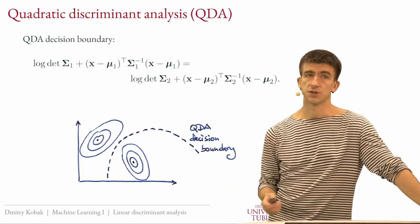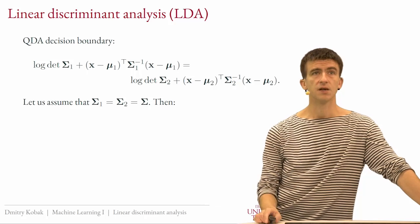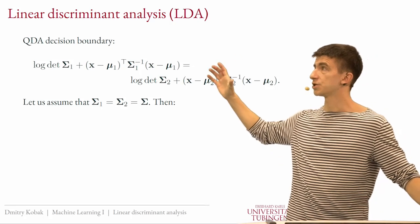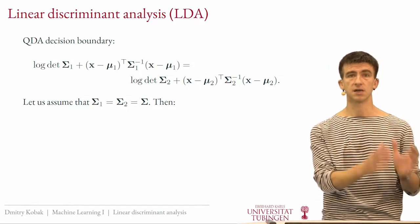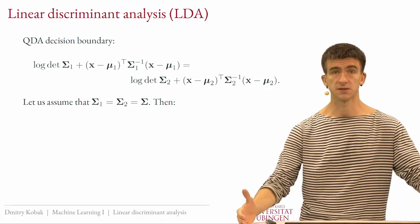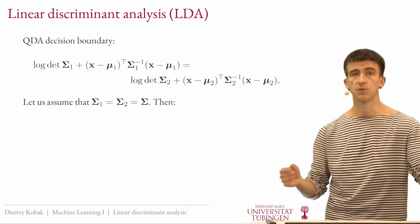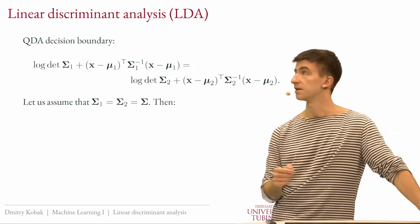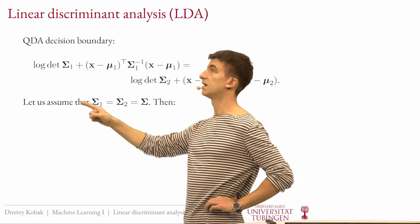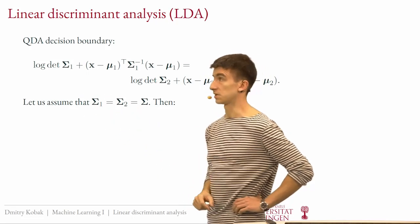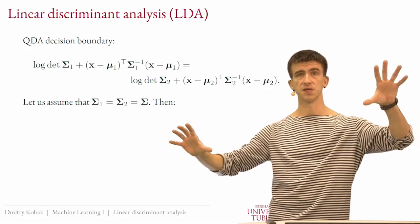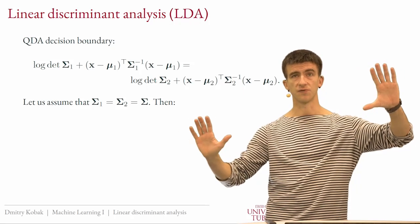To get from QDA to LDA, we make one additional assumption: the covariance matrices are the same across classes. We assume Σ_1 = Σ_2 = Σ. Of course the means are different — one class sits here and another sits there — but they share the same covariance matrix.